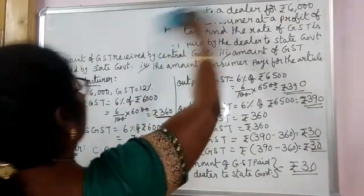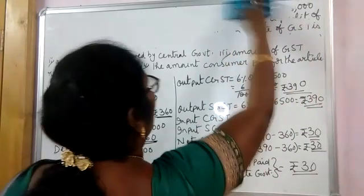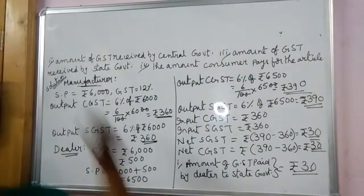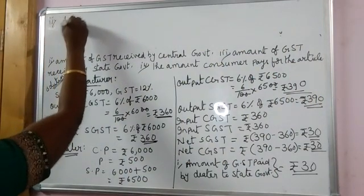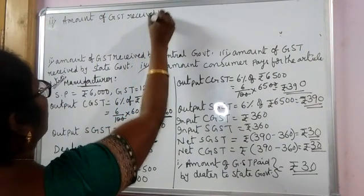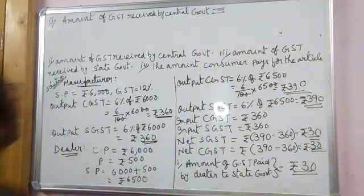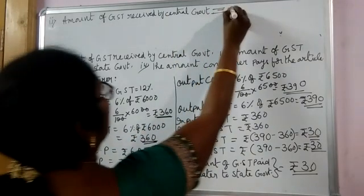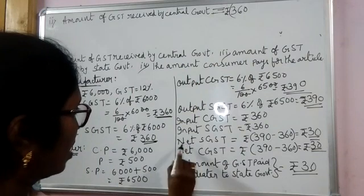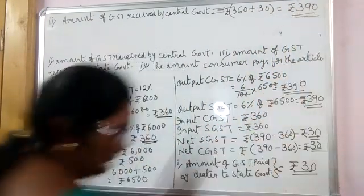Second: the amount of GST received by the central government. Both the manufacturer and the dealer paid to the central government. The manufacturer paid 360 rupees and the dealer paid 30 rupees. So the total amount received by the central government is 390 rupees.